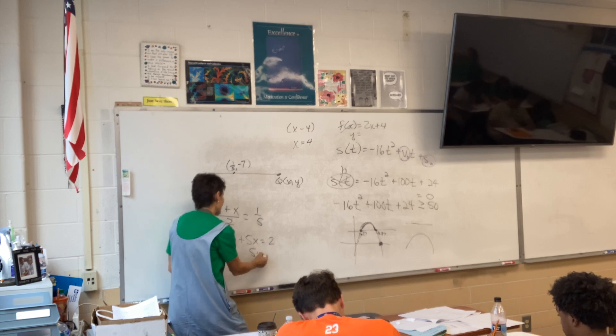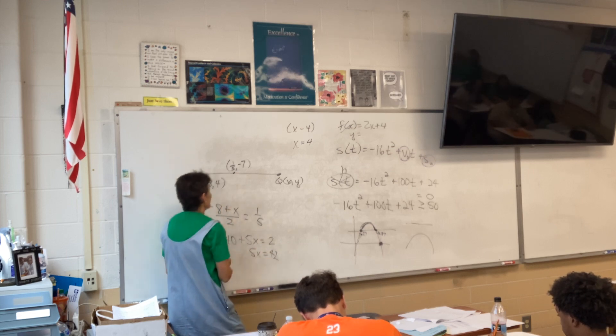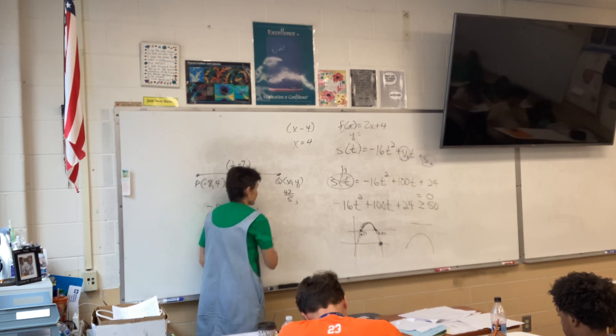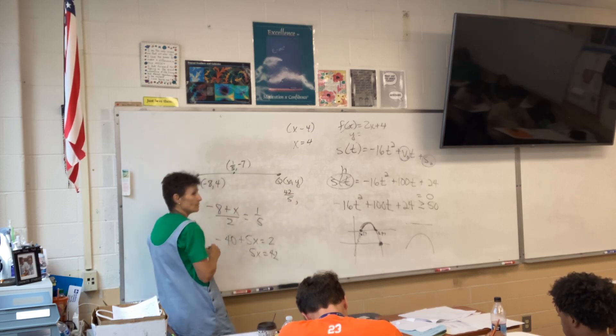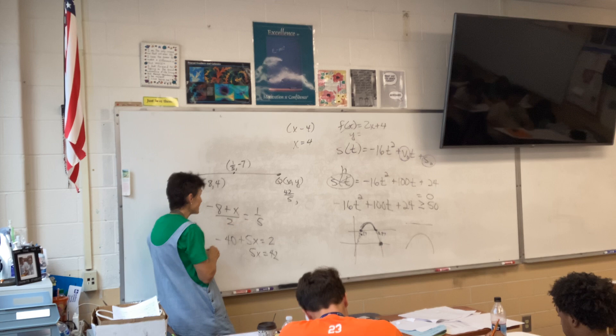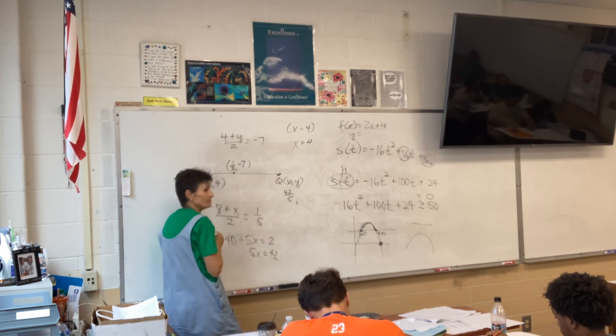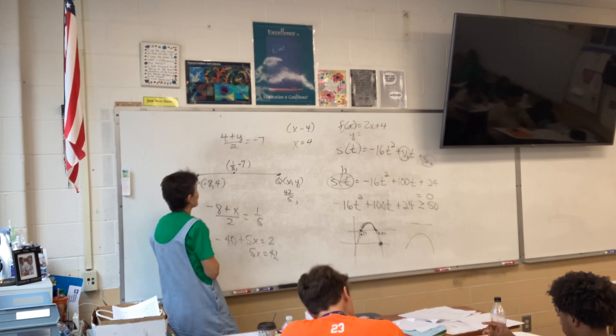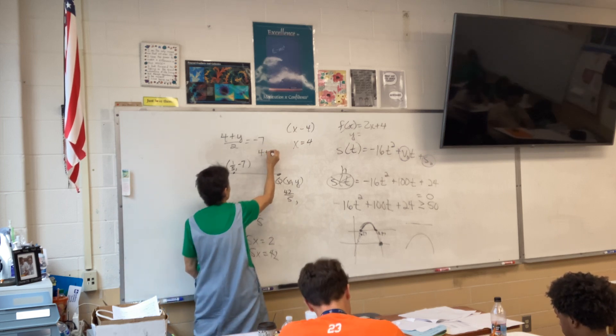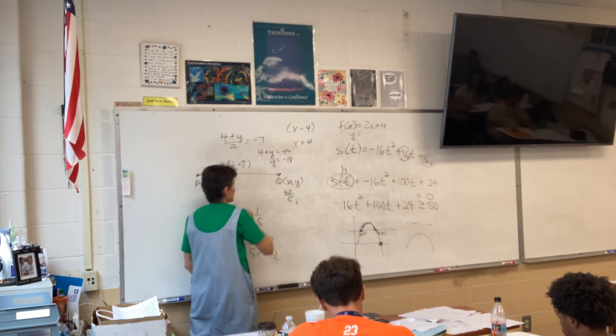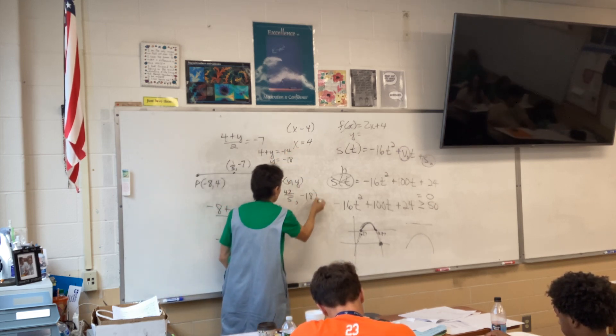How do you find midpoint? Take the average. So kind of the meat-and-potatoes way would be negative 8 plus X divided by 2 has to be one-fifth. Yeah. Right? The average of negative 8 and X has to be one-fifth. So, I'll cross-multiply, negative 40 plus 5X equals 2, 5X equals 42, so X is 42 fifths.